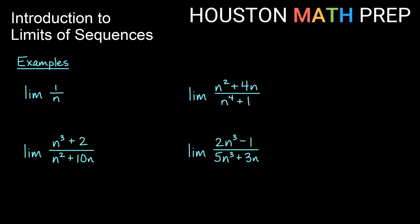Let's take a look at some examples. You may recognize some of these as very familiar from a Calculus 1 class doing limits with functions — these are very similar. The limit of 1 over n: we have a constant over something that gets infinitely large, so as n gets really big the whole fraction gets smaller and smaller, and so the limit here is 0. Another way to say that would be that the sequence 1 over n converges to 0.